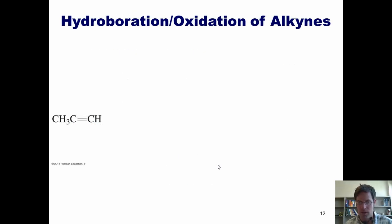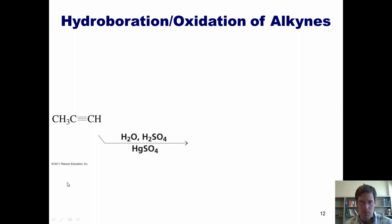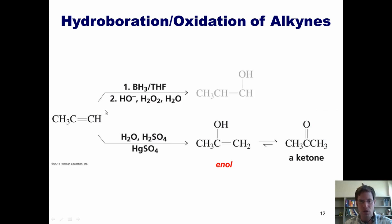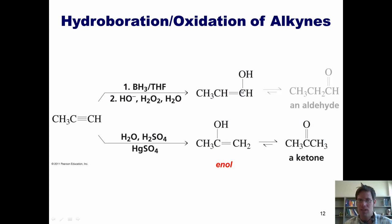We can also do hydroboration oxidation reactions with alkynes, which we need to contrast with the Markovnikov addition of water. If we treat an alkyne with mercury sulfate, sulfuric acid, and water, we place the OH on the internal carbon to generate an enol, which tautomerizes to form a ketone. In contrast, under hydroboration oxidation conditions, we place the OH on the external carbon to give the anti-Markovnikov product, which then tautomerizes to form an aldehyde.